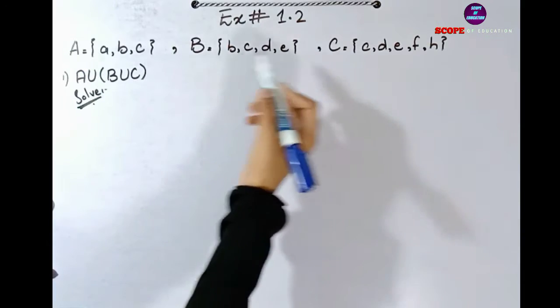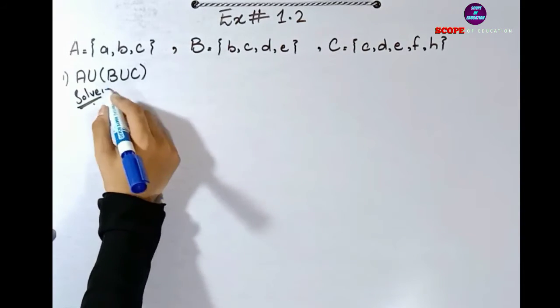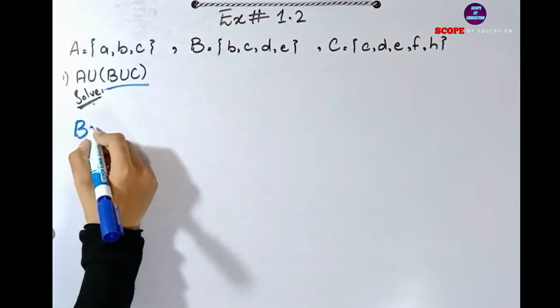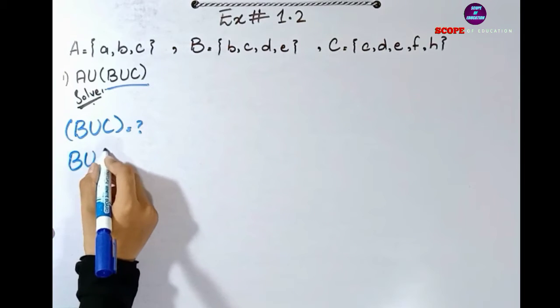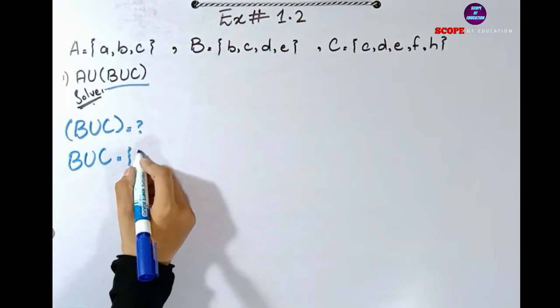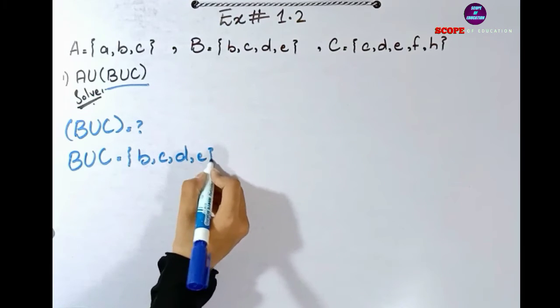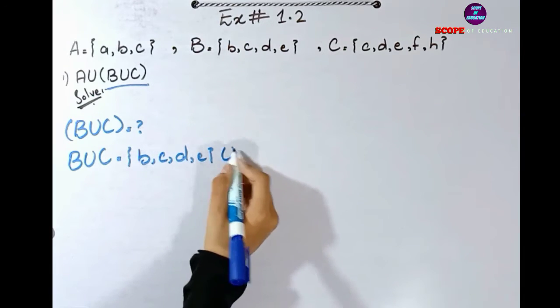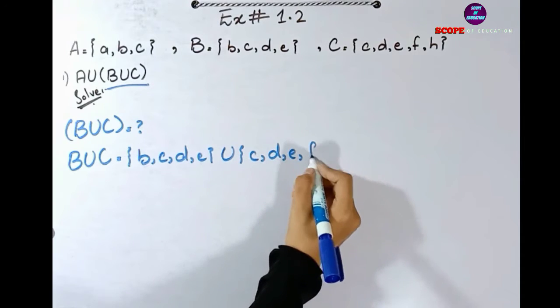So here we have three sets: A, B, and C. And the question is A union B union C. First, let's find. B has b, c, d, and e, and C has c, d, e, f, and h.